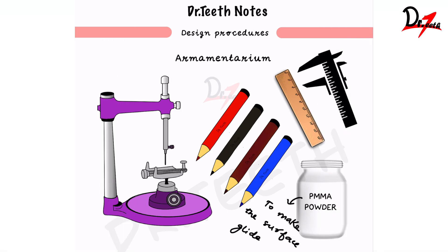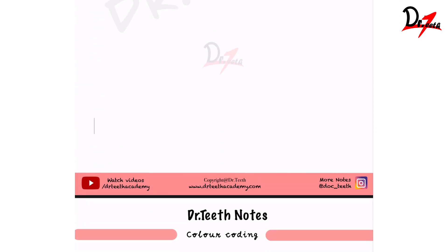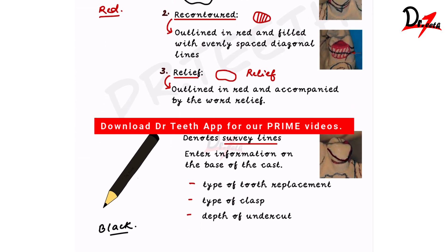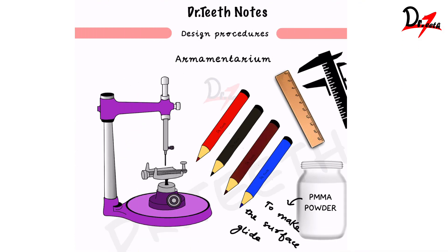Welcome back to the channel. Today we are going to talk about the design procedures in removable partial denture, or cast partial denture. In this video we are going to talk about the armamentarium — what all things are required for the designing purpose and how we actually design. Taking help of an example, we are going to design a cast partial denture. Complete notes are available on the Dr. Teeth app, where you can also access many more videos.